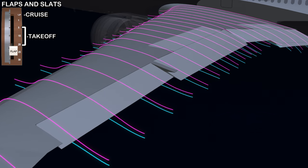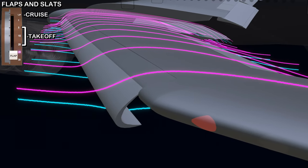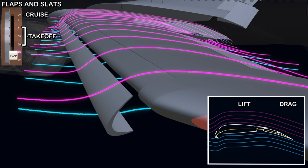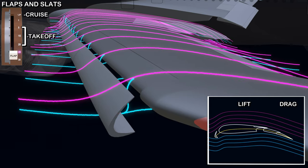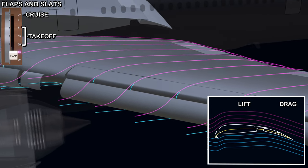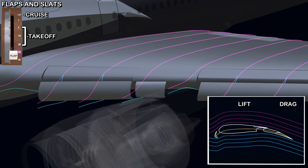Flap position 25 first extends the slats into the gapped position. In this position, a gap is created between the wing and the slats. This allows some of the high-pressure air from the lower surface of the wing to flow through to the upper surface, increasing the stall margin in low-speed flight conditions. Stall prevention features will be explained in the pitch control chapter of the series. The Kruger flap increases the camber but does not create a gap.